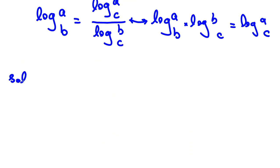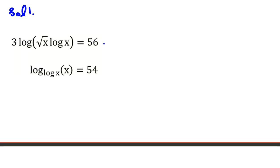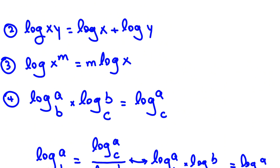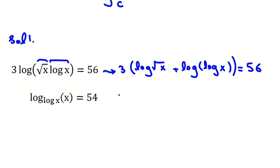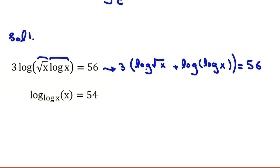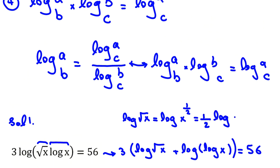The first solution works only with logs; the second solution also uses a change of variable. For the first part, we have a product: 3·log(√x)·log(x) = 56. Using the product rule, log(√x · x) = log(√x) + log(x). So factoring out 3: 3·[log(√x) + log(x)] = 56. Now log(√x) = log(x^(1/2)) = (1/2)·log(x) by the power rule.